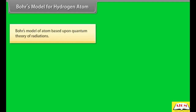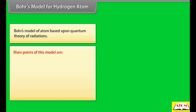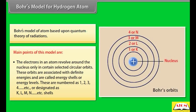Bohr's model for hydrogen atom: Bohr's model is based upon the quantum theory of radiations. Main points: The electrons in an atom revolve around the nucleus only in certain selected circular orbits. These orbits are associated with definite energies and are called energy shells or energy levels, numbered as 1, 2, 3, 4 etc. or designated as K, L, M, N shells.